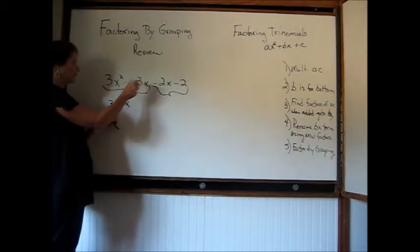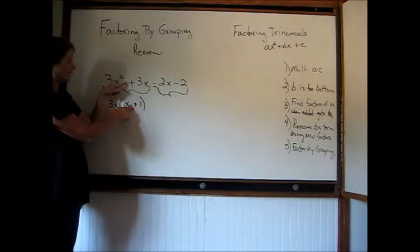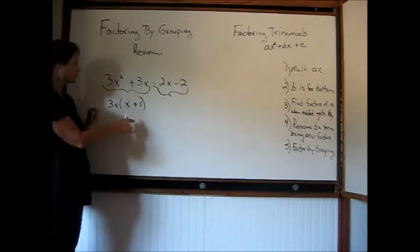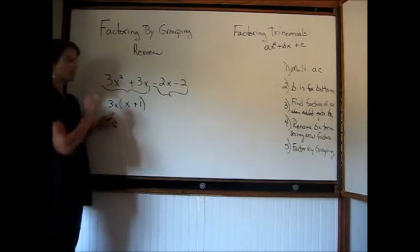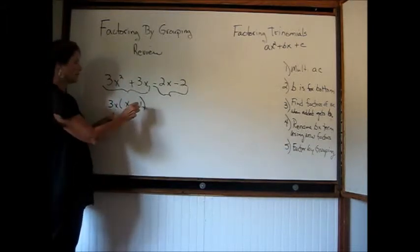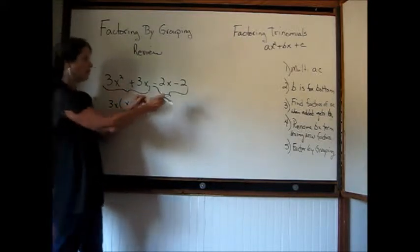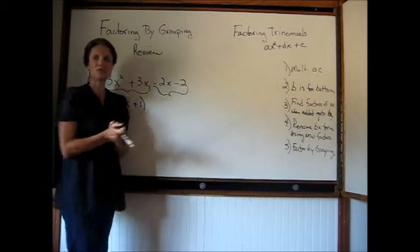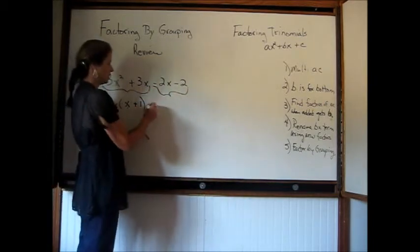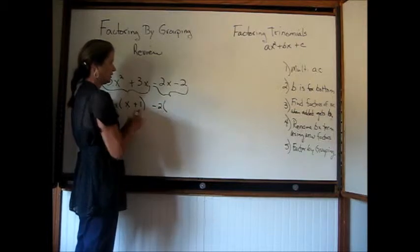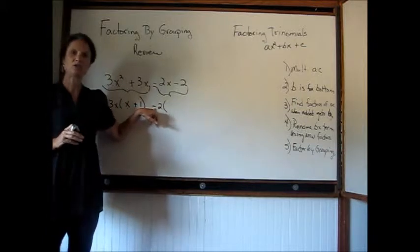Now divide here: 3x divided by 3x is 1. You use the same sign that's in your original problem. Double check: 3x times x is 3x squared, 3x times 1 is 3x. Remember this is called the distributive property. Now we jump over here — look at these two terms, what do they have in common? They have a minus 2 in common. Whatever sign is here, that's what you're going to use here.